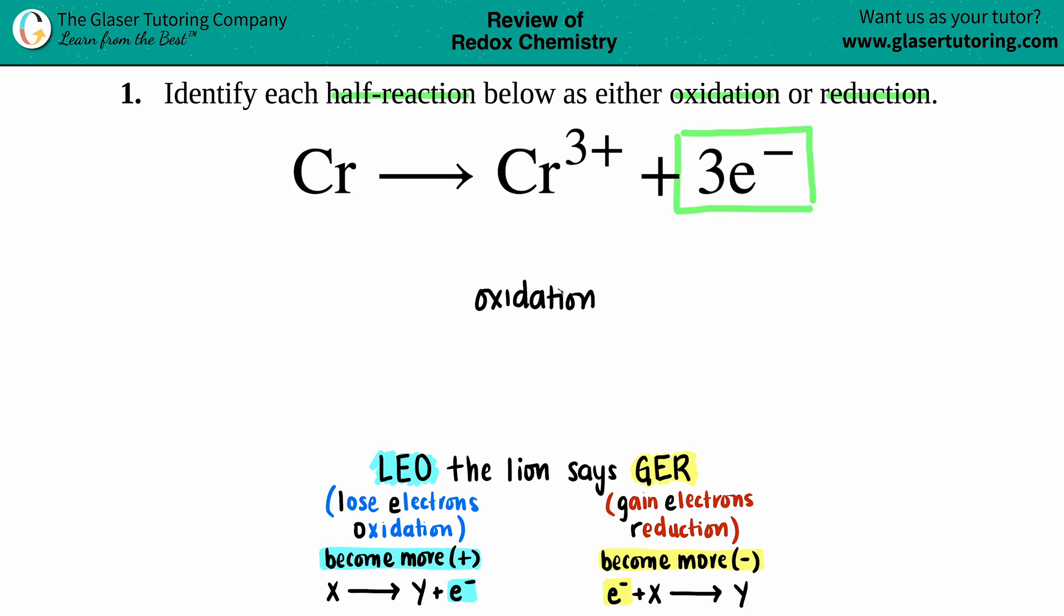And that's it. That means that this chromium is going to lose electrons because it's undergoing oxidation. And it's as simple as that. So there is the answer and we are done.